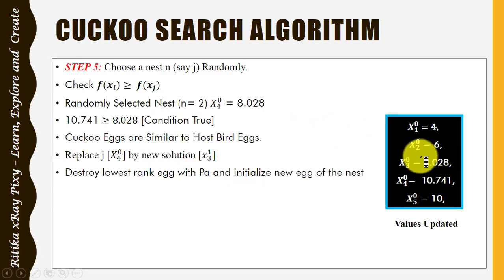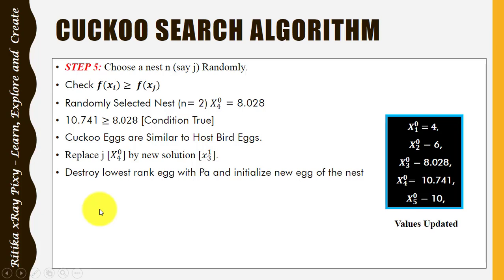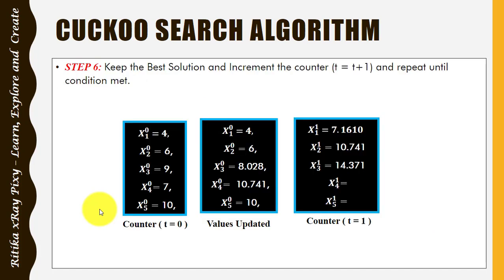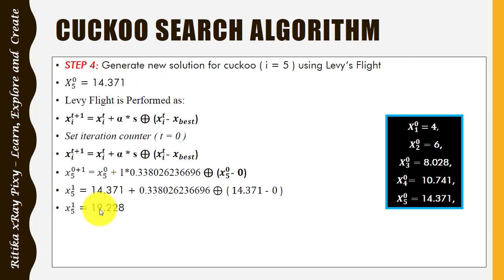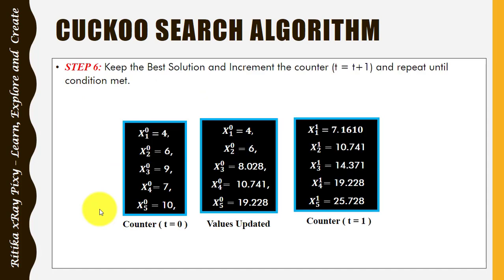Select cuckoo number three — this is the recently updated position. Put the values into the Lévy flight and get the solution. Again, randomly select a nest, check the condition: if true, replace the solution with the new one and calculate the new nest near the older one. Update like this for all cuckoos. The fifth cuckoo is done. These are the updated values based on which we get the result for iteration 1.